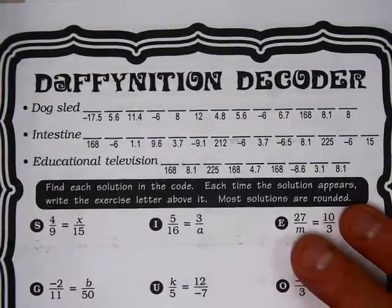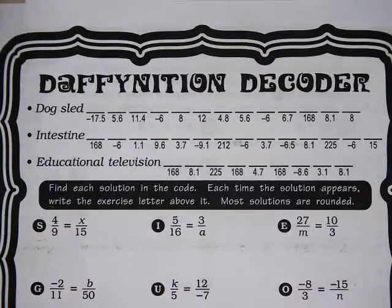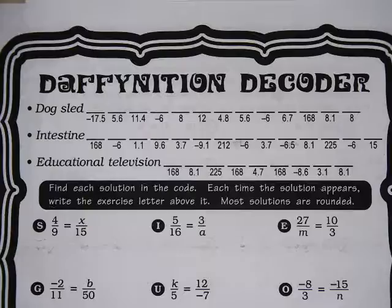Definition decoder. These are not the funniest, I have to admit that. Dog sled. Polar coaster. Kind of like a roller coaster. Oh, you got it? It's just not that funny. Intestine. Taking an exam. Okay, educational television. Text tube, like your textbook. Text tube.